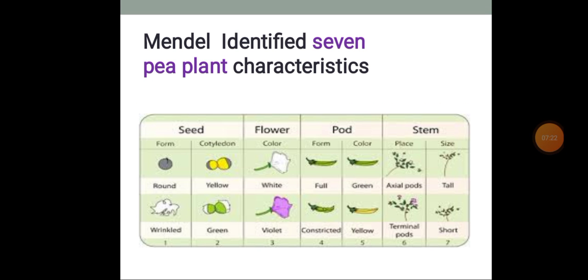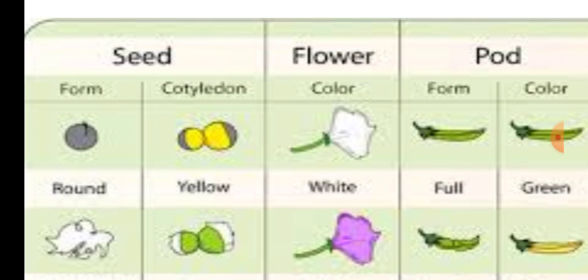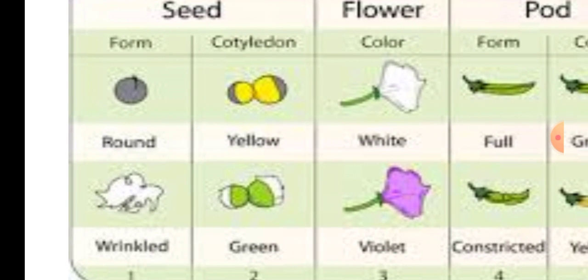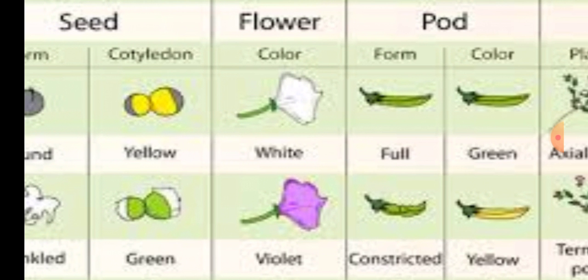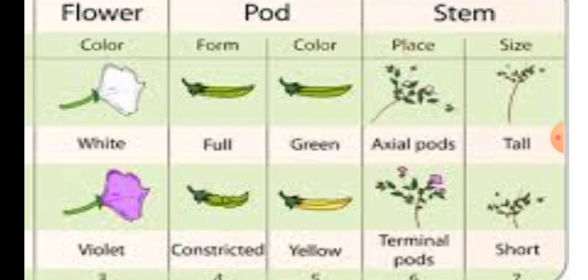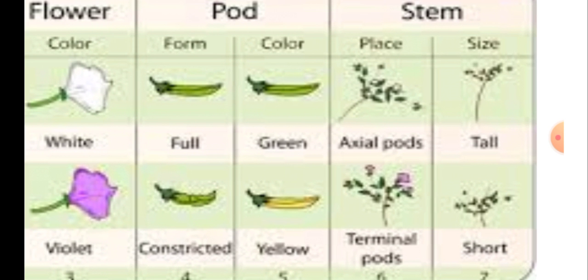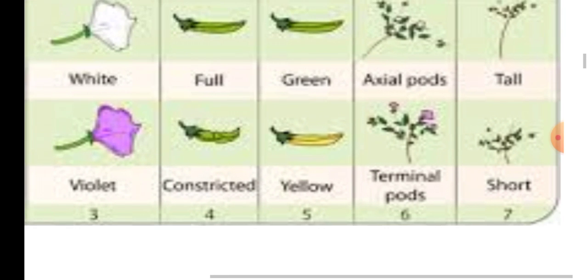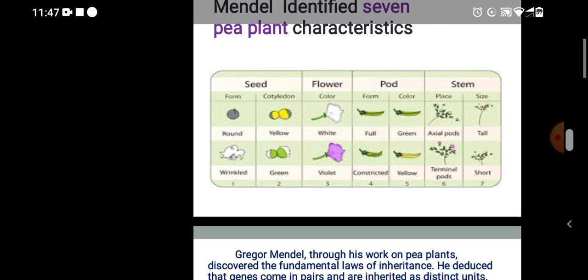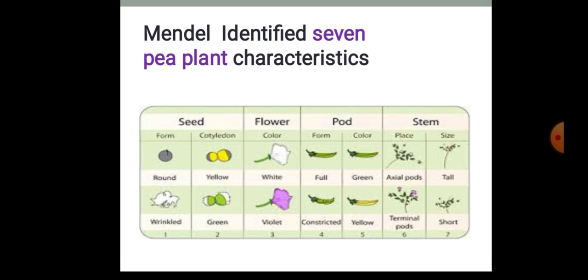You can better understand by using this picture. Mendel identified 7 pea plant characteristics — 7 pairs of contrasting traits. For seeds: form is round or wrinkled; cotyledon color is yellow or green. For flowers: color is white or violet. For pods: form is full or constricted, color is green or yellow. For stem: size is tall or short. For flower position: axial or terminal.